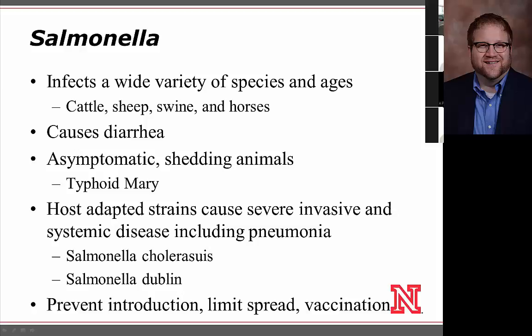Salmonella, similar to Salmonella in humans, can infect a wide variety of species, age ranges, and hosts, and causes diarrhea. Animals can have asymptomatic shedding — similar to Typhoid Mary — where they're colonized with the pathogen but show no clinical signs yet can infect others. There are host-adapted strains, including Salmonella choleraesuis in pigs and Salmonella dublin in cattle, which cause severe disease. Prevention strategies include testing new animals, quarantining them upon purchase, and vaccination.